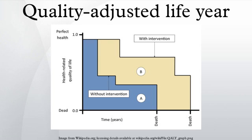It assumes that a year of life lived in perfect health is worth one QALY, and that a year of life lived in a state of less than perfect health is worth less than one. In order to determine the exact QALY value, it is sufficient to multiply the utility value associated with a given state of health by the years lived in that state. QALYs are therefore expressed in terms of years lived in perfect health; half a year lived in perfect health is equivalent to 0.5 QALYs, the same as one year of life lived in a situation with utility 0.5. QALYs can then be incorporated with medical costs to arrive at a final common denominator of cost per QALY.